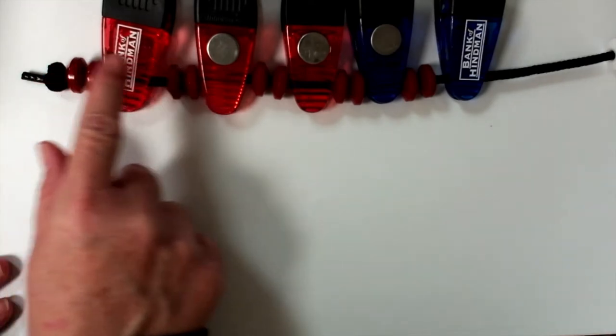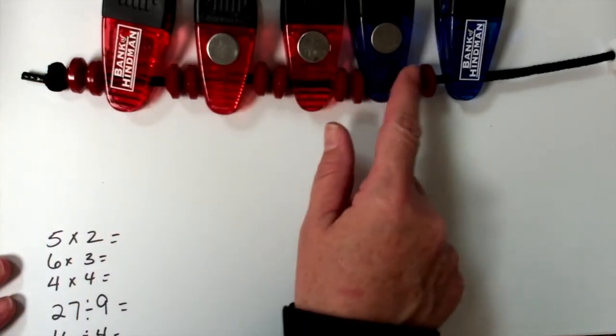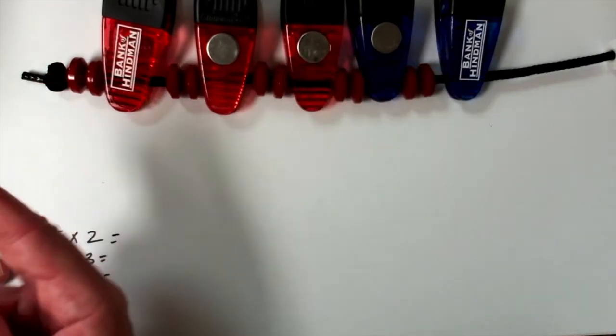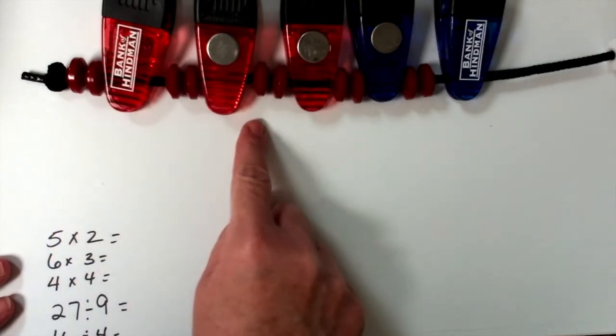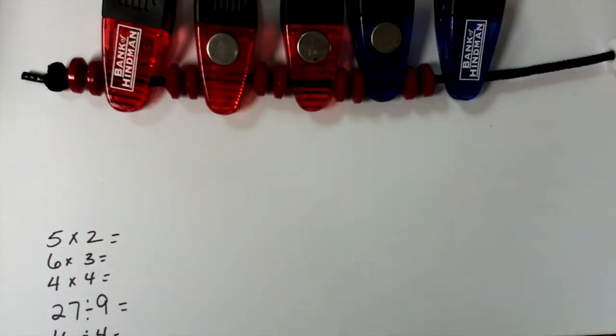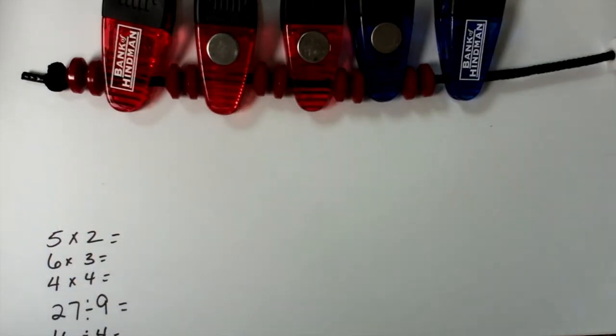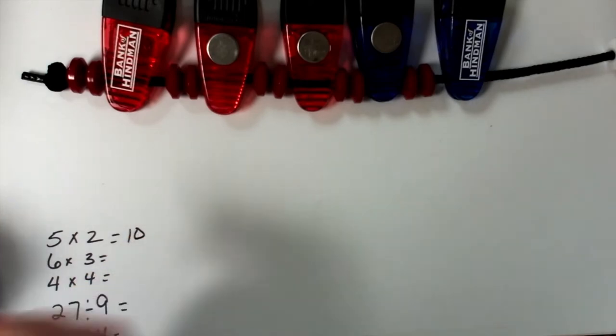Now my students can count up if they need to — 1, 2, 3, 4, 5, 6, 7, 8, 9, 10 — or if they can count by twos: 2, 4, 6, 8, 10. And they know this is ten. So that's one way.